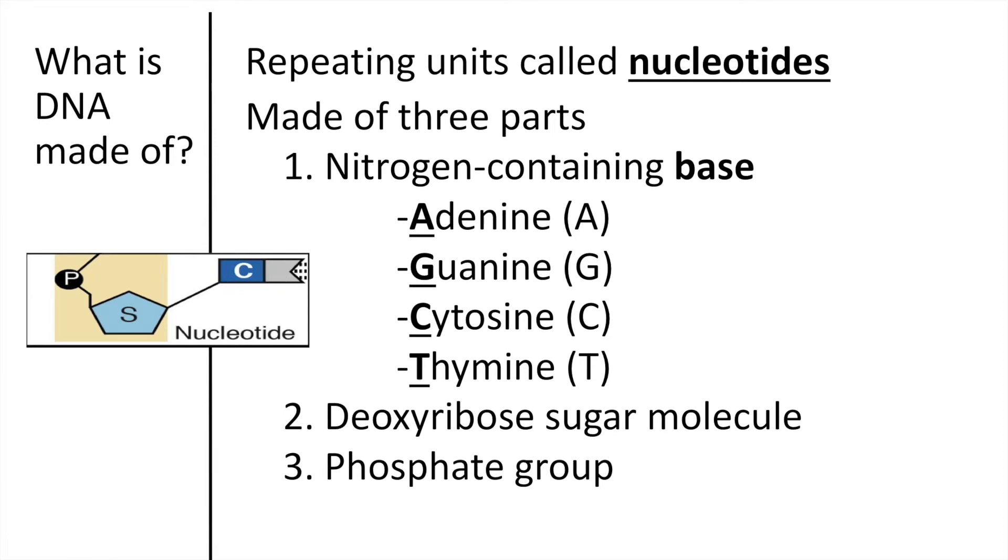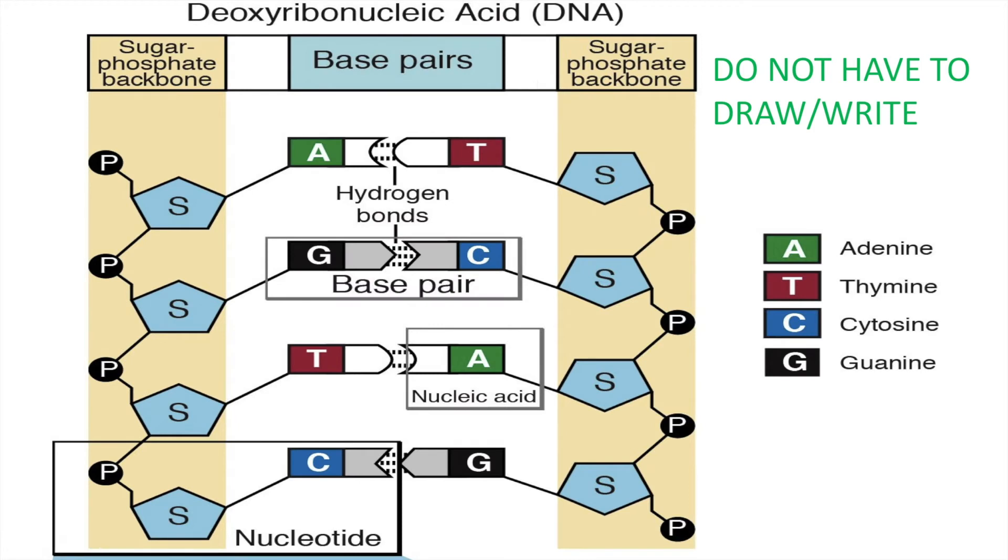Let me show you a larger picture of some DNA with multiple nucleotides attached to each other because, remember, DNA is made of repeating units that are all connected. So here we have DNA, and in this structure, we have a ladder. And notice here that we have adenine, we have thymine, we have guanine, and cytosine.